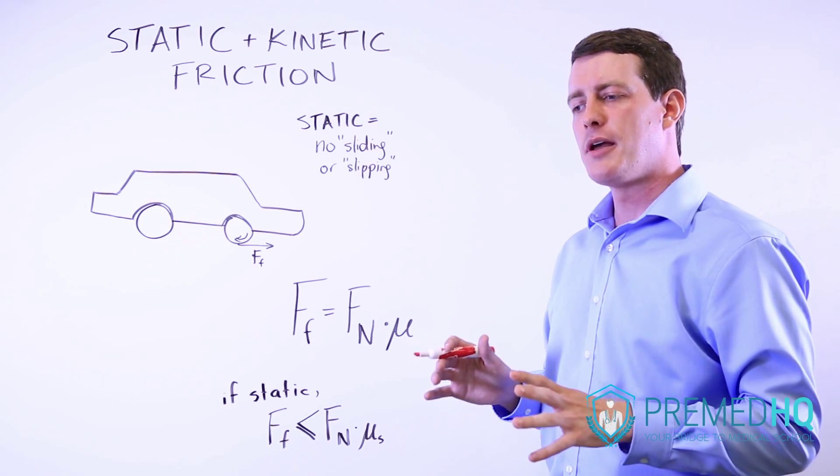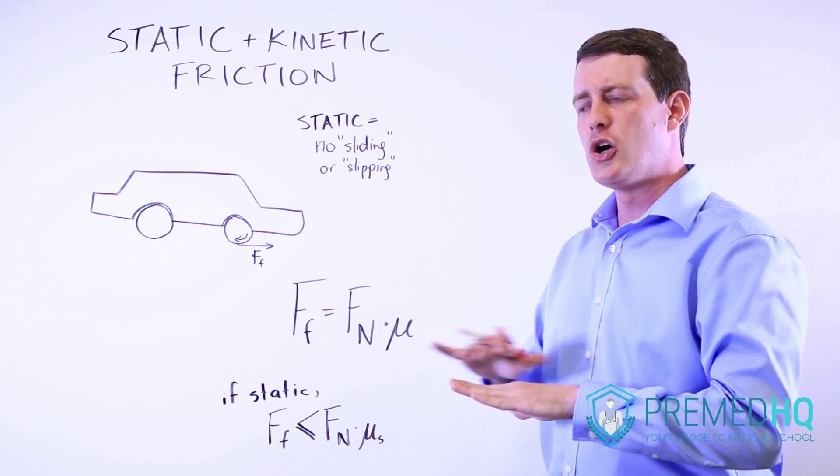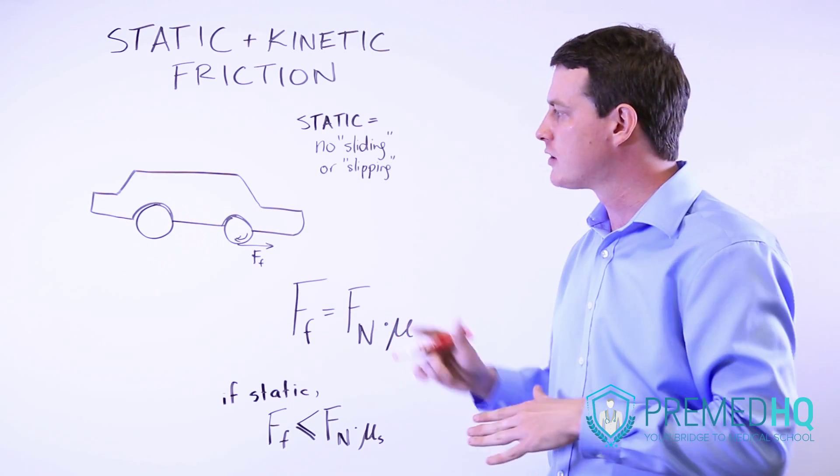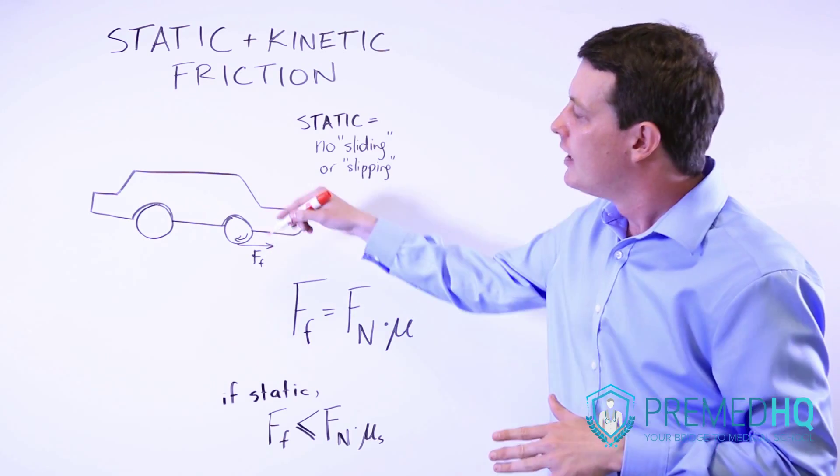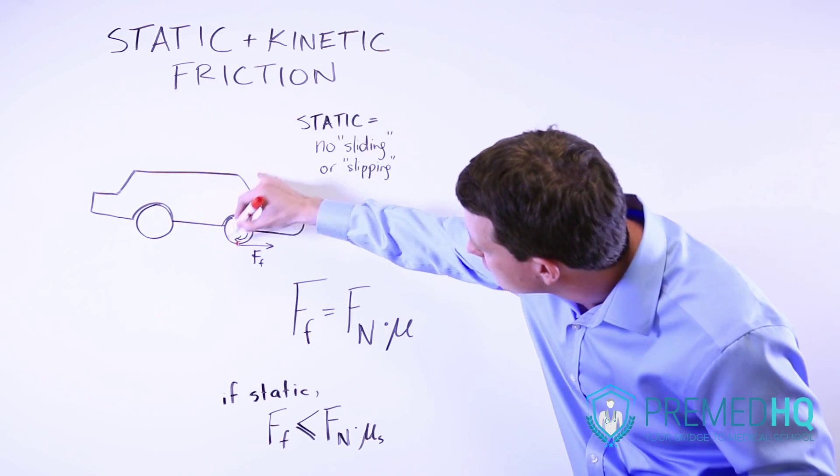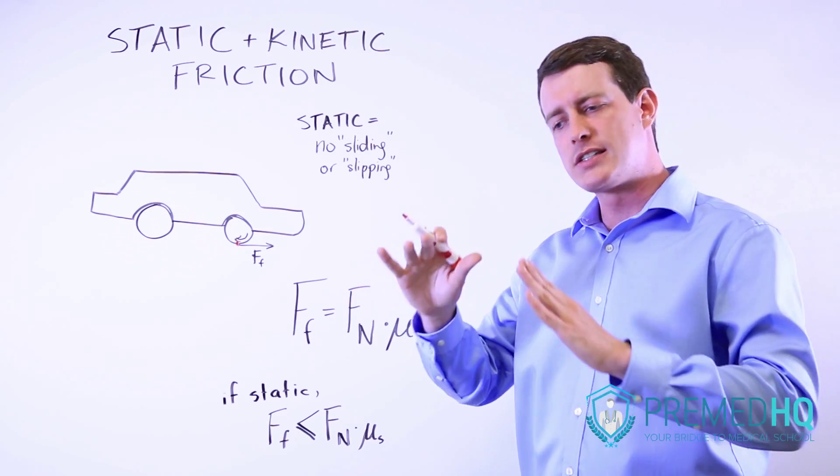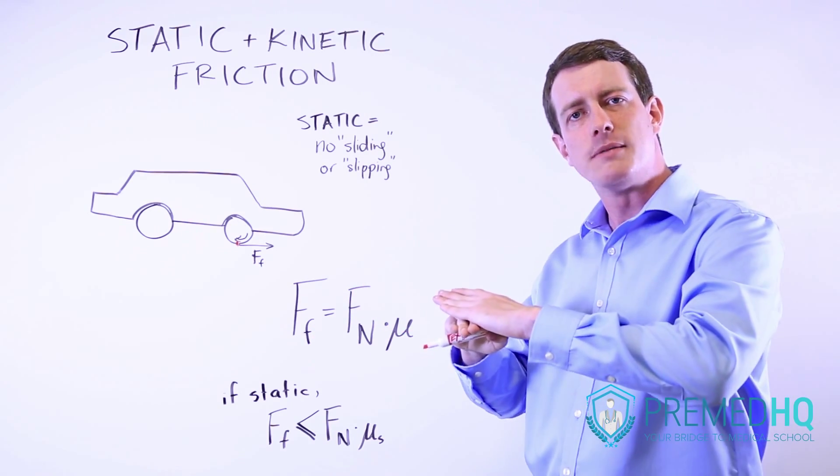Static friction basically means that there is no slipping or sliding of the object along the surface. So for example, with a car, at the point where the tire meets the road, there is no slipping. The tire isn't slipping, but instead it's very rigid at that point in the system.